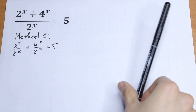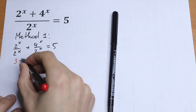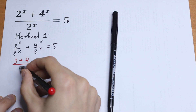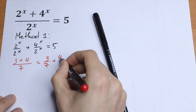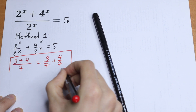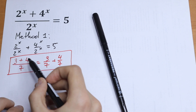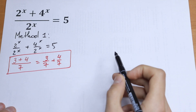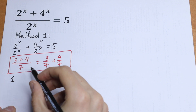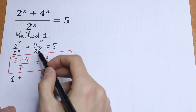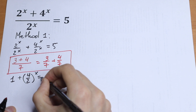If we have, for example, 3 plus 4 over 7, we can write it as 3 over 7 plus 4 over 7 — same denominator, and we divide each term by that denominator. So as a result we get 1 here, since 2 to the power x over 2 to the power x equals 1, and we can simplify the remaining term, writing it in one expression: 4 over 2, raised to the power x, equal to 5.